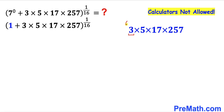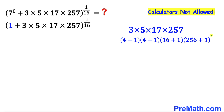I'm going to tweak these numbers. 3 could be written as 4 minus 1, and 5 could be written as 4 plus 1. Now for 17, this could be written as 16 plus 1, and finally 257 could be written as 256 plus 1. In this next step I have replaced 3 by (4−1), 5 as (4+1), 17 as (16+1), and 257 as (256+1).